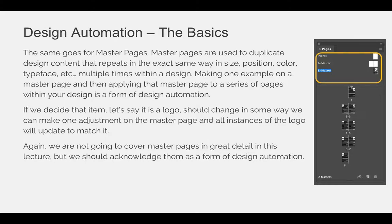A good example for master pages are your page numbers. If you decide they should all be in the bottom right-hand corner and then change your mind and want them centered, you can make one change on a master page and it will automate the movement of all page numbers on every page in your project. We are not going to cover master pages in great detail in this lecture, but we should acknowledge them as a really good form of design automation.